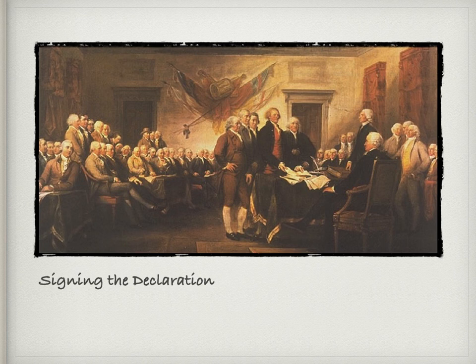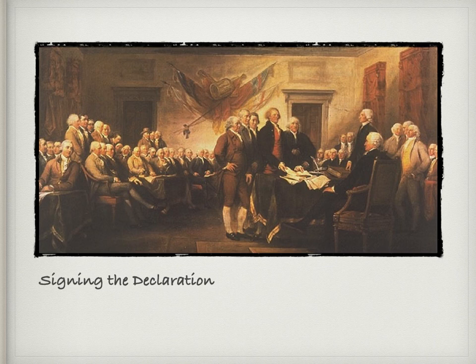You've seen this picture before — the signing of the Declaration of Independence. It didn't actually happen exactly this way; these men probably weren't all in the same room, and it would have been unsafe. But you see famous Americans depicted. The tall red-headed gentleman in the middle is Thomas Jefferson, and to his right in the painting is Benjamin Franklin. It's a dramatic painting trying to capture that famous moment when independence was declared and adopted.